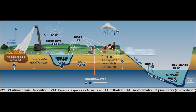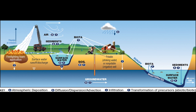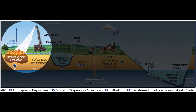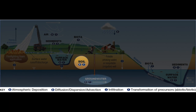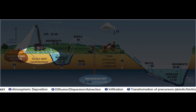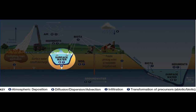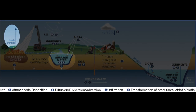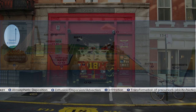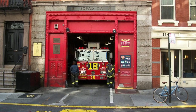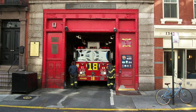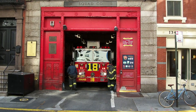When aqueous film-forming foams are used to extinguish liquid chemical fires or used in fire training activities, a mixture of non-polymer PFAS from the foam is released into the environment. The PFAS may be deposited in soil and leached to groundwater, or it can run off to impact surface water. Some PFAS may also be released to the air, although this is not well studied. PFAS may also be released unintentionally from AFFF storage facilities or a fire suppression system in buildings where chemicals are stored.